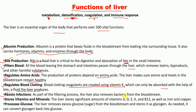The liver resists infection — as part of the filtering process, the liver removes bacteria from the bloodstream. Another important function is the storage of vitamins and minerals: the liver stores significant amounts of vitamins A, D, E, K, and B12, as well as iron and copper. The liver also processes glucose by removing excess sugar from the bloodstream and storing it as glycogen. When energy is needed, glycogen is converted back into glucose.